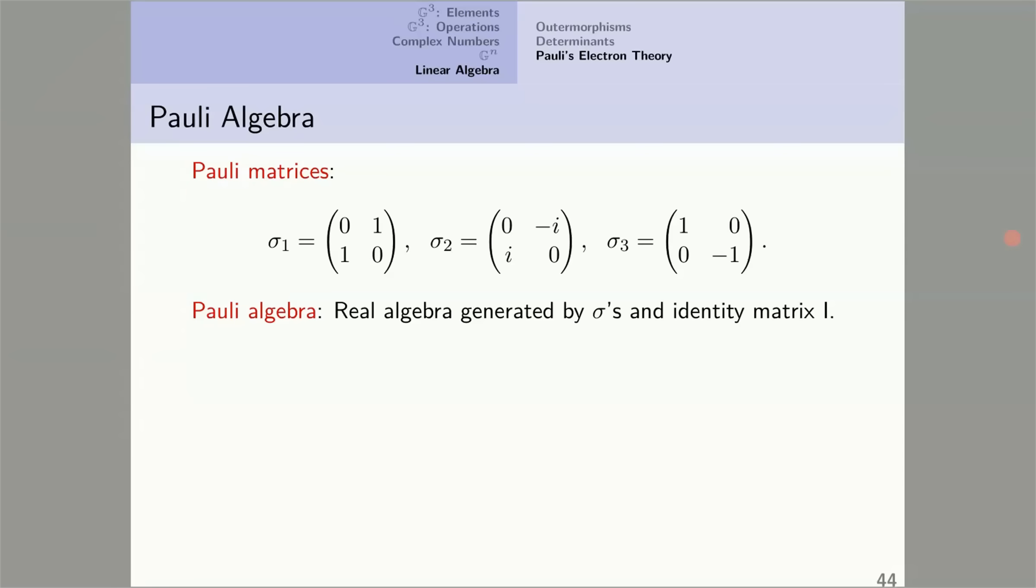Now here's an interesting thing from the geometric algebra point of view. The Pauli algebra is isomorphic to G^3. The isomorphism is a correspondence between the sigma_j's and E_j, the basis vectors of R^3. Sigma_1 corresponds to E1, and so on. Sigma_2 times sigma_3 corresponds to E2 times E3, and so on.